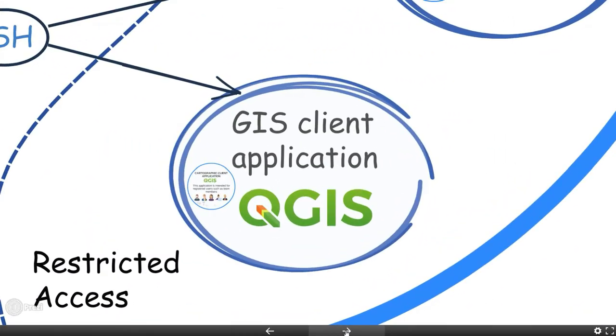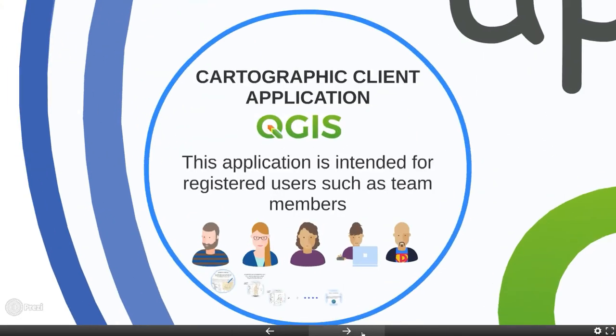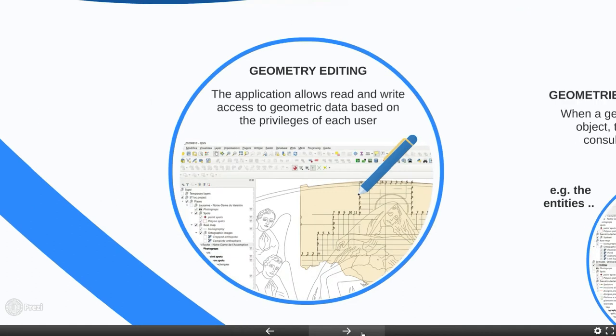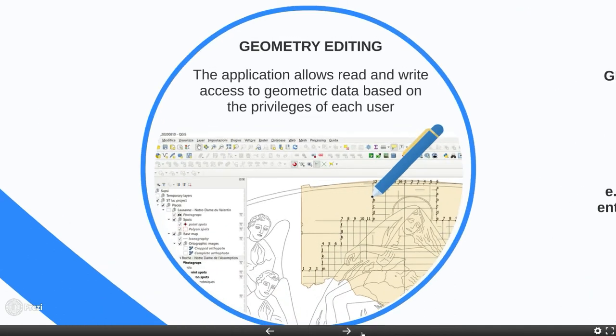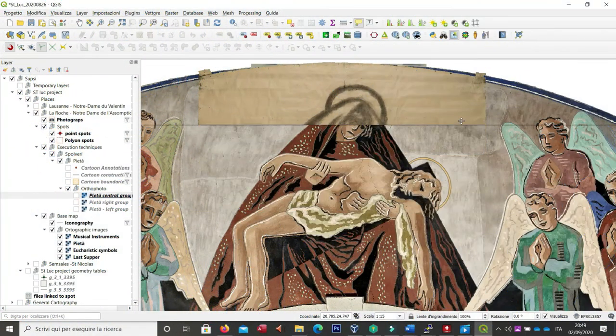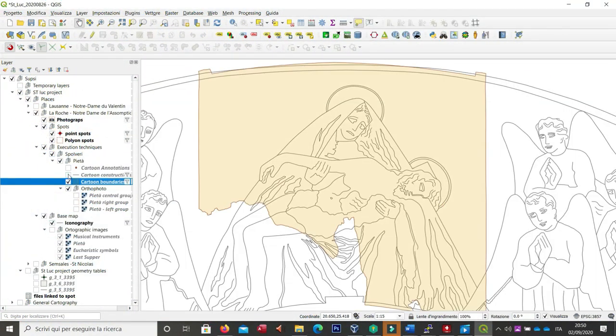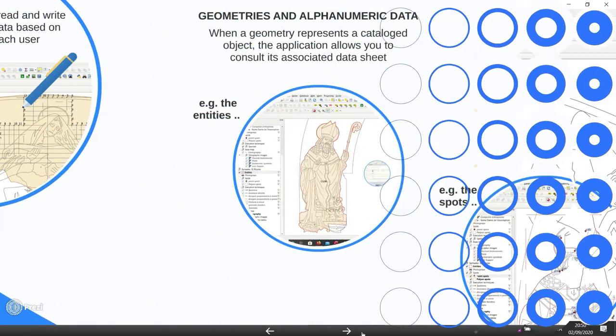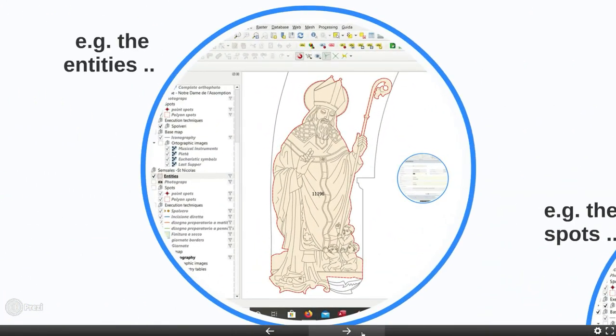The second application is based on QGIS, an open source GIS client. This application is used by team members and provides read and write access to spatial tables, based on user privileges. This cartographic application is used to browse thematic maps and orthographic images. Furthermore, the application allows to access alphanumeric data when geometry have associated records in the database.